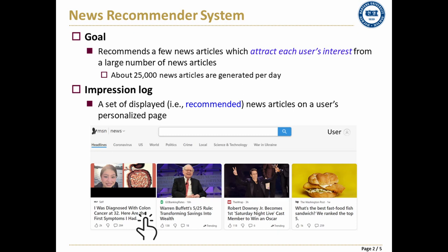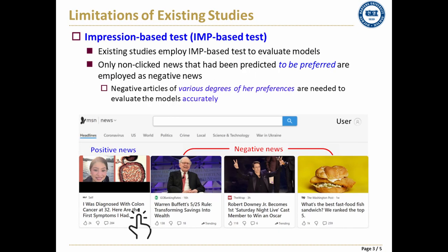We call this information impression log data. Previous studies employ the impression log data to evaluate the qualities of their trained models. The news that the user clicked is considered positive news, and all other news in the impression log data are considered negative news. We name this testing setting an imp-based test.